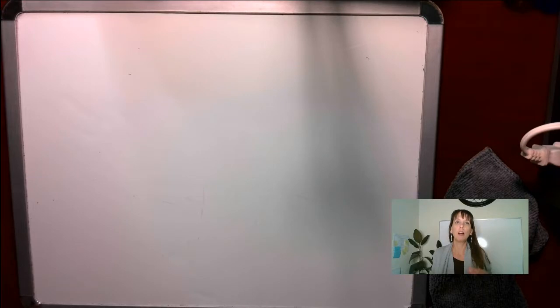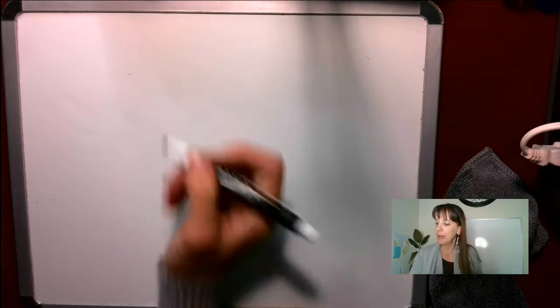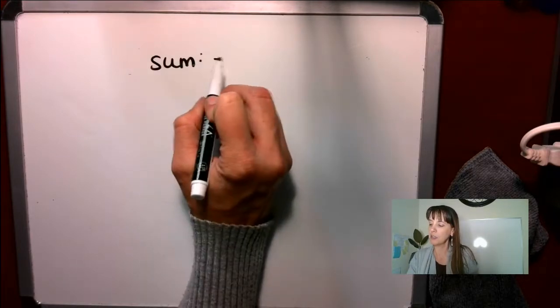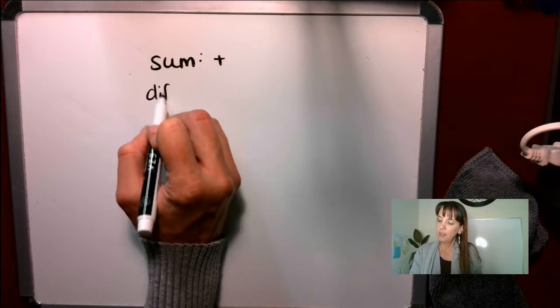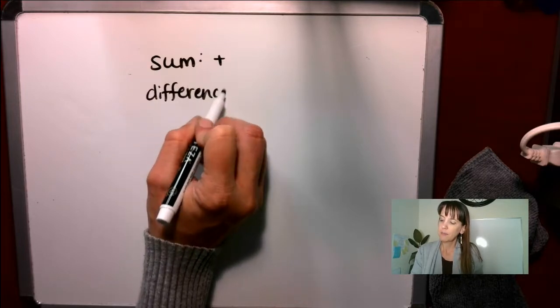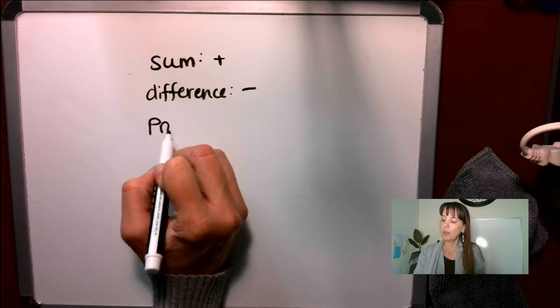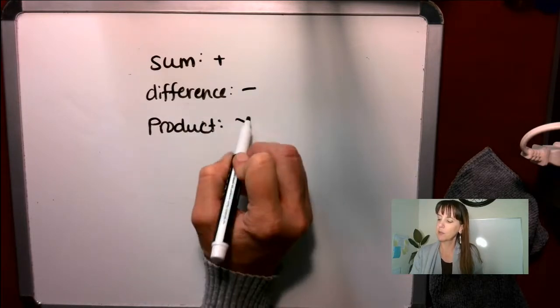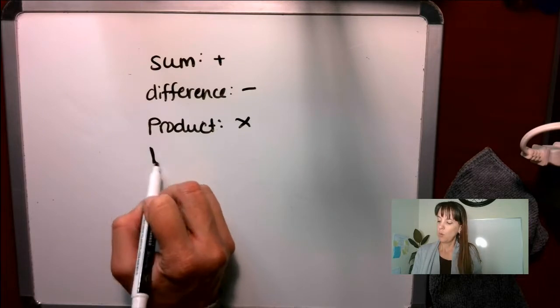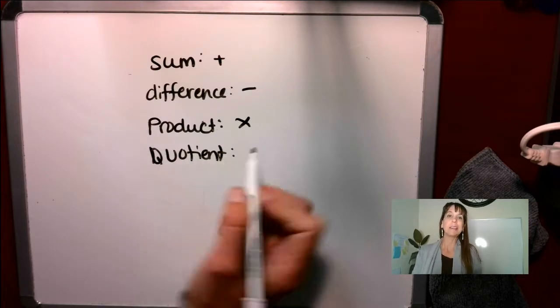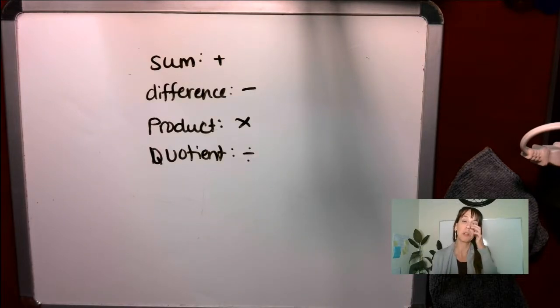Oh, these are my favorite. We're going to be talking about converting between English and math. The common words that you will see are: sum means addition, difference means subtraction, product means multiplication, quotient is division. So those are all really important. Make sure you write those down. Flag them so you have them.